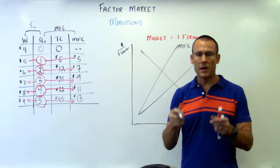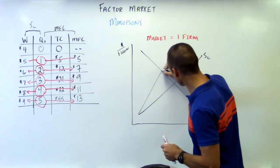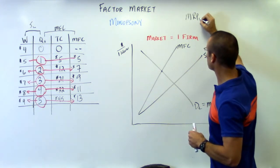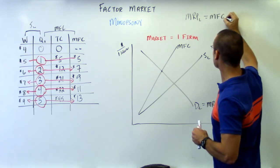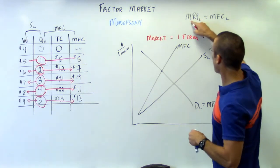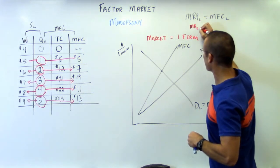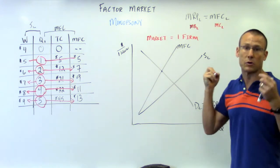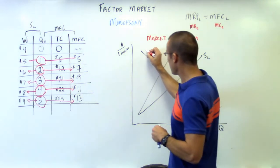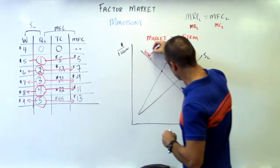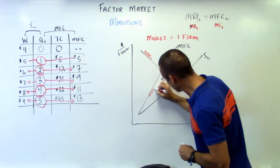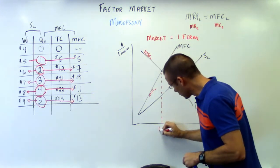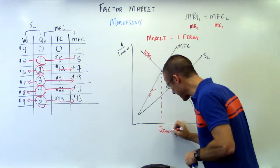What do we want to find out? How many people we're going to hire. We simply go to where MFC equals MRP — where MRP of labor equals marginal factor cost of labor. The MRP of labor is the marginal benefit of labor to the firm; the marginal factor cost is the marginal cost of hiring labor. We hire as long as MRP sub-L is above MFC sub-L, all the way to the intersection point — that's our profit-maximizing quantity.